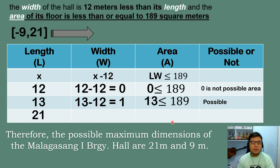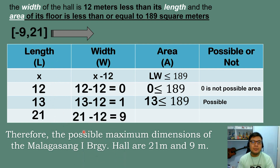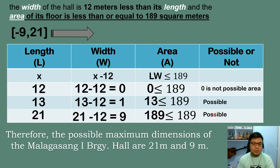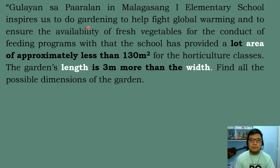The question asks for the possible maximum dimensions. The largest valid value is x equals 21, giving length equal to 21 meters and width equal to 21 minus 12 equals 9 meters. Checking: 21 times 9 equals 189, which is less than or equal to 189 — confirmed. Therefore, the maximum possible dimensions of the barangay hall floor are 21 meters by 9 meters.